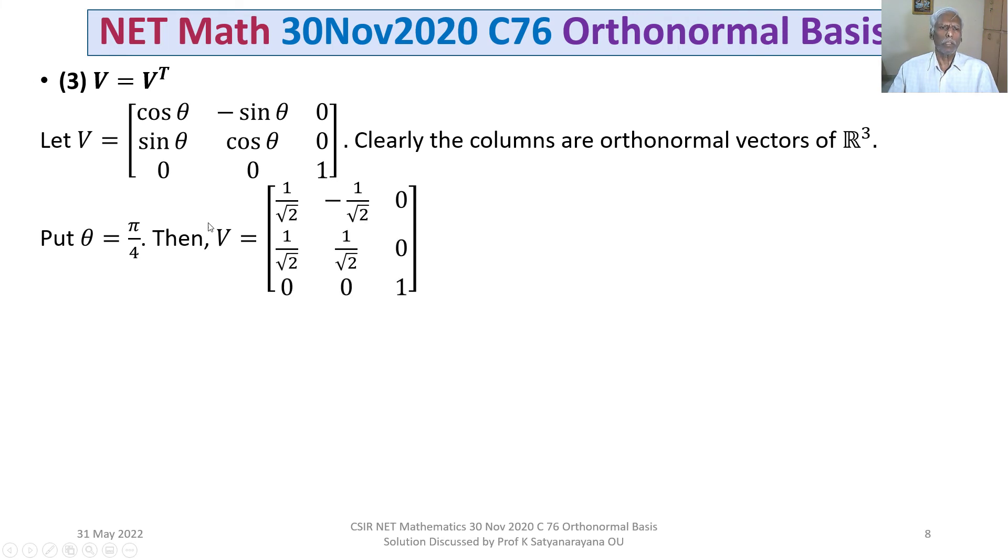Put θ = π/4, then we get V as the 3 by 3 matrix whose first row is 1/√2, -1/√2, 0, second row 1/√2, 1/√2, 0, third row 0, 0, 1.